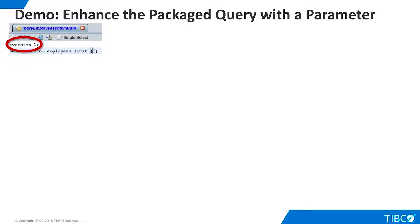We have successfully used a Packaged Query to leverage product-specific functionality on a legacy query. Now let's use TDV to make the legacy query even more flexible and useful. We'll do this by adding an input parameter. We begin by making a copy of our Packaged Query and naming it PQueryEmployeesWithParam. On the SQL tab, we add the text VERSION2 enclosed in angle brackets. This enables TDV to handle certain input parameter situations, such as null values and escape characters, more gracefully. We replace the original limit value of 20 with {0} wrapped in curly braces. The 0 indicates that this is the first input parameter. We can have as many input parameters as we need, but they must be numbered sequentially, beginning with 0.